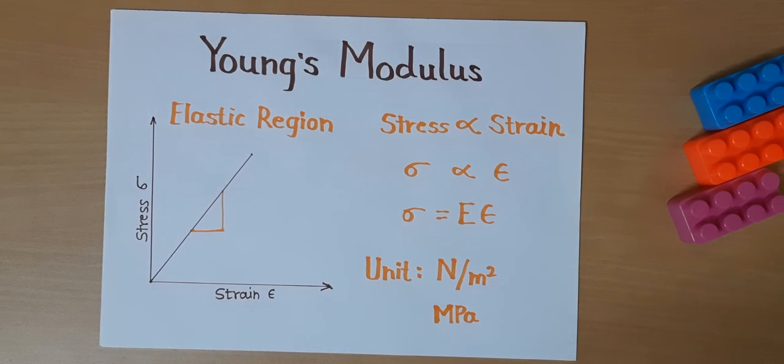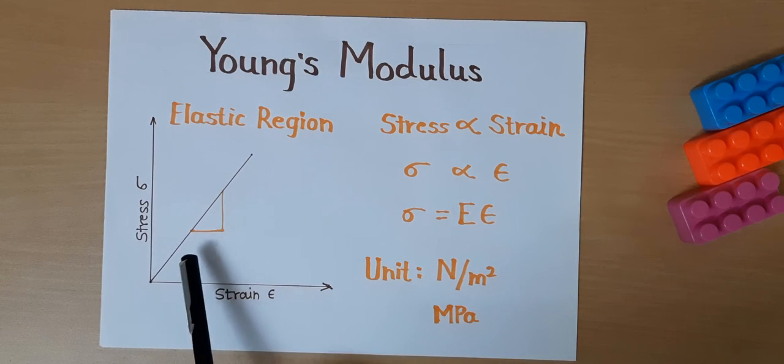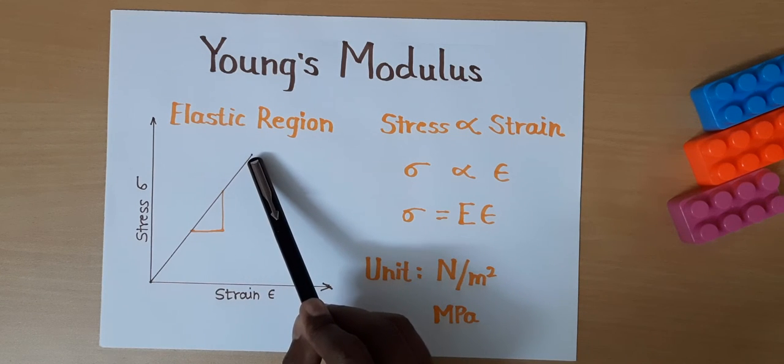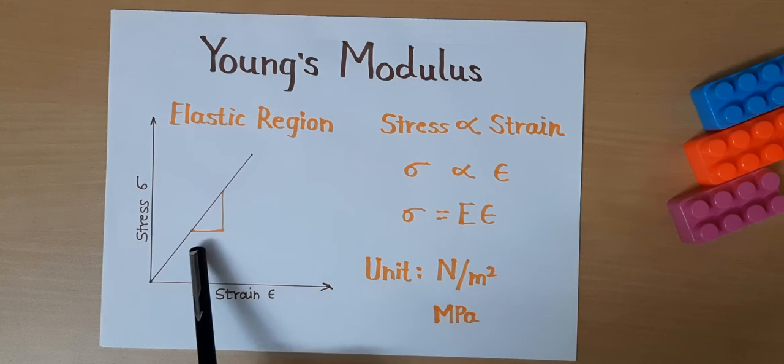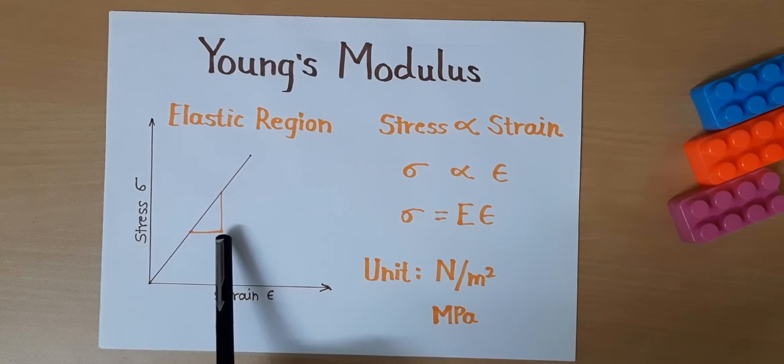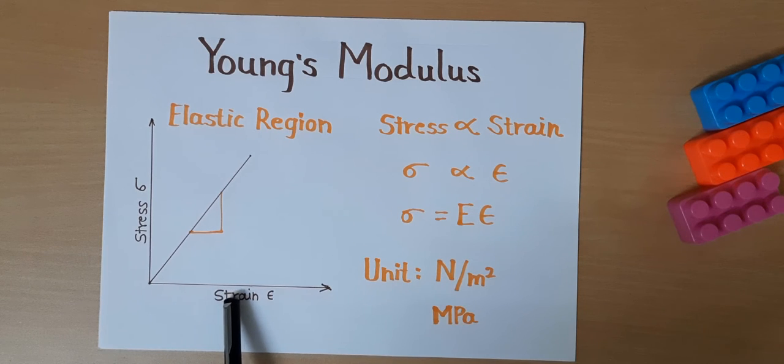Now we will understand the elastic region. I have drawn only the elastic region on the stress-strain curve. If you see, this line is linear and we can take the slope of this line. How can we calculate the slope? We calculate the slope from the stress and strain values.